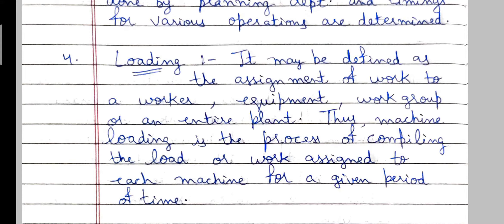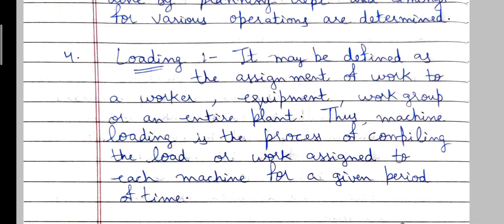The last function under production planning functions is loading. Machine loading is the process of compiling the load or work assigned to each machine for a given period of time. So assigning the load to a specific machine for a given period of time is machine loading. The four functions of production planning are planning, routing, scheduling, and loading.